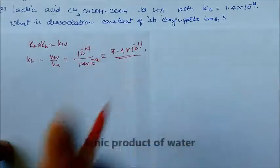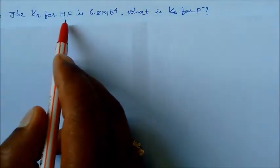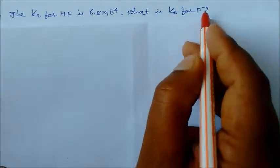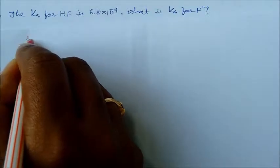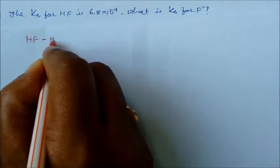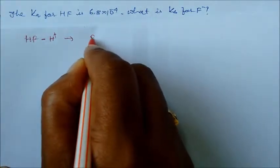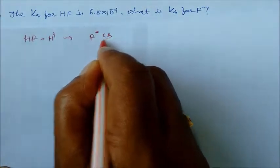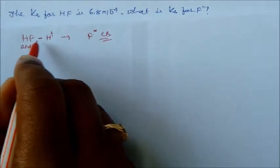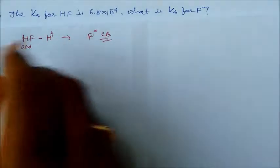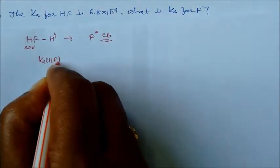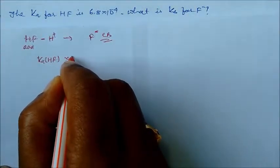The Ka for HF is 6.8 × 10⁻⁴. What is the Kb for F⁻? We can use the same formula. HF reacts — it has one more H⁺, giving HF₂⁻, and its conjugate base is F⁻. So Ka(HF) × Kb(F⁻) = Kw.